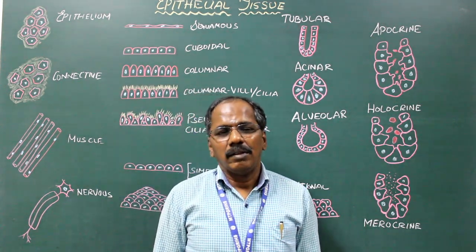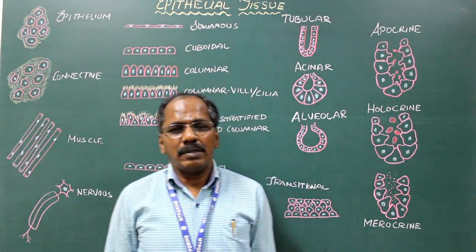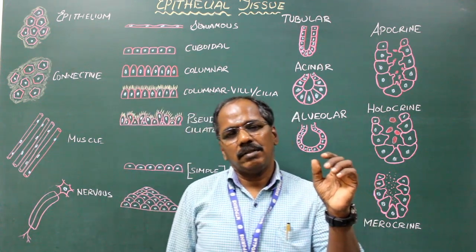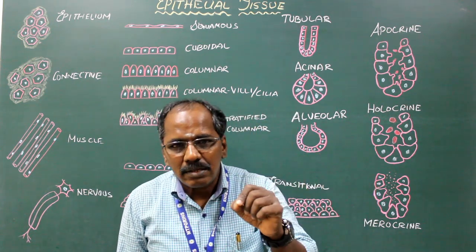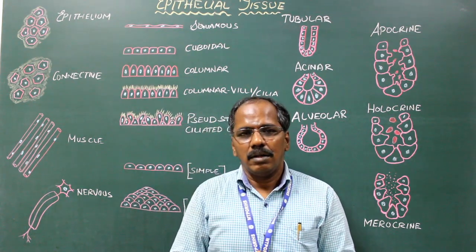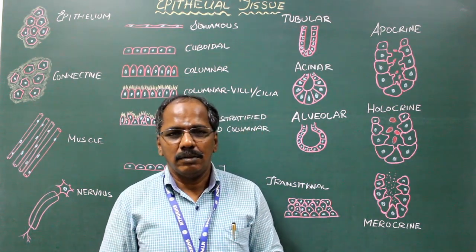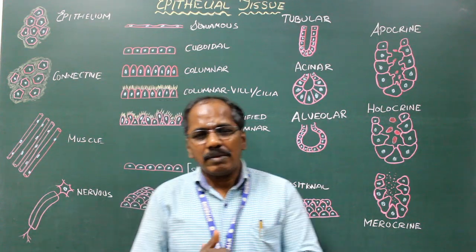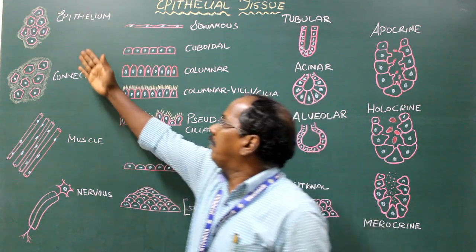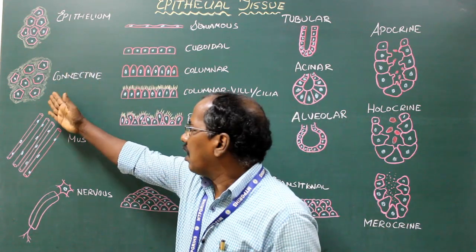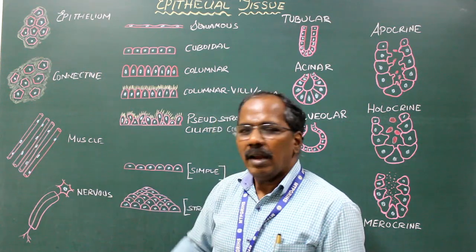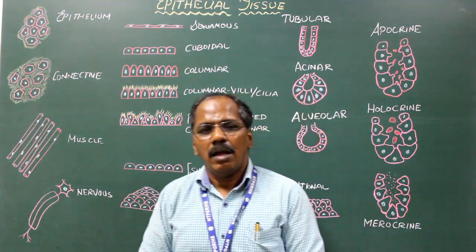Good morning. Today we are going to see the tissues. Tissue definition: a group of cells performing a similar function constitutes a tissue. Basically there are four types of tissues: epithelial tissue, connective tissue, muscular tissue, and nervous tissue.